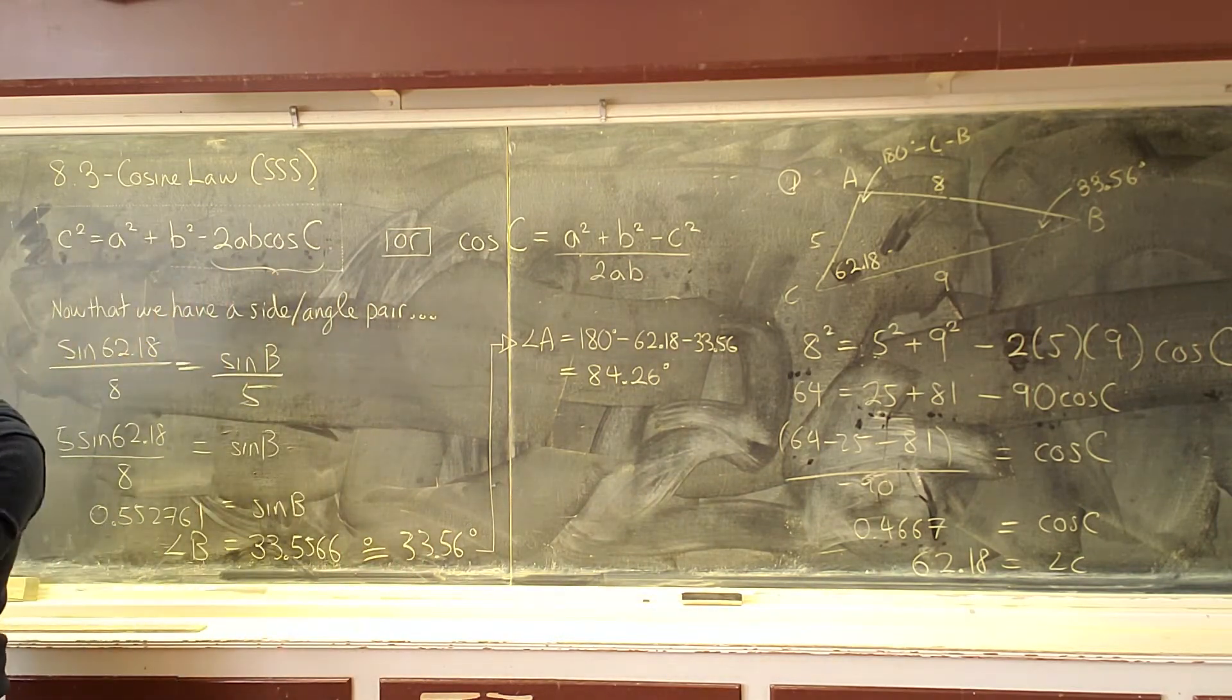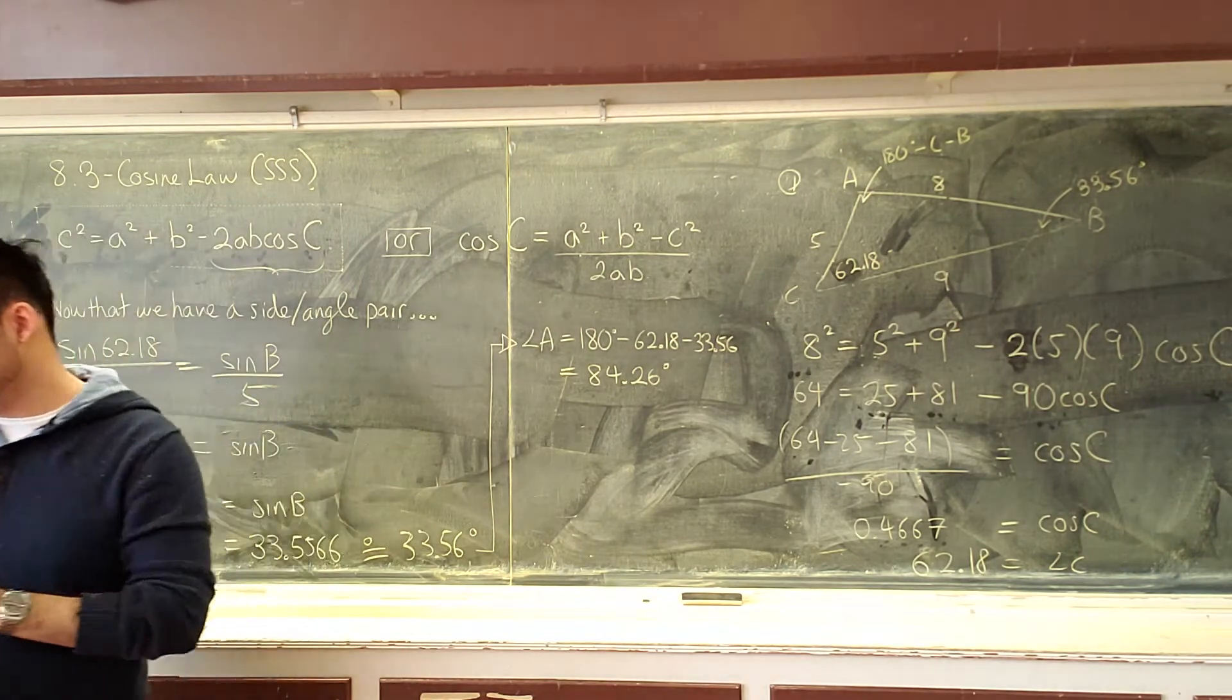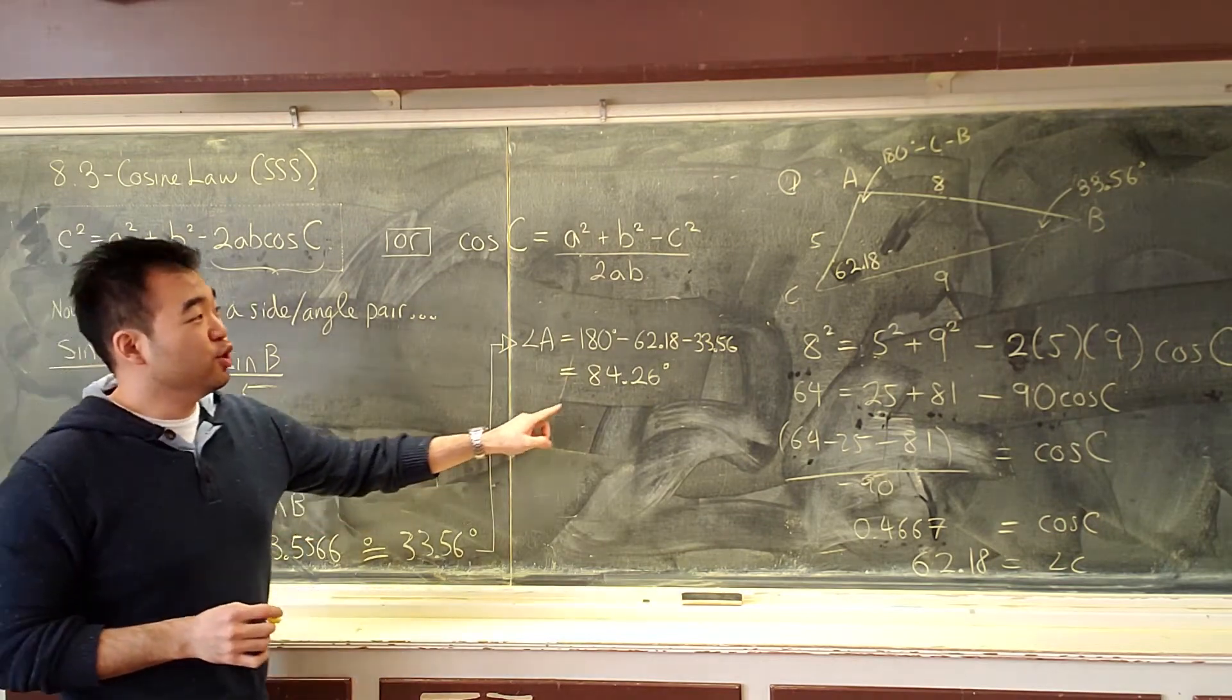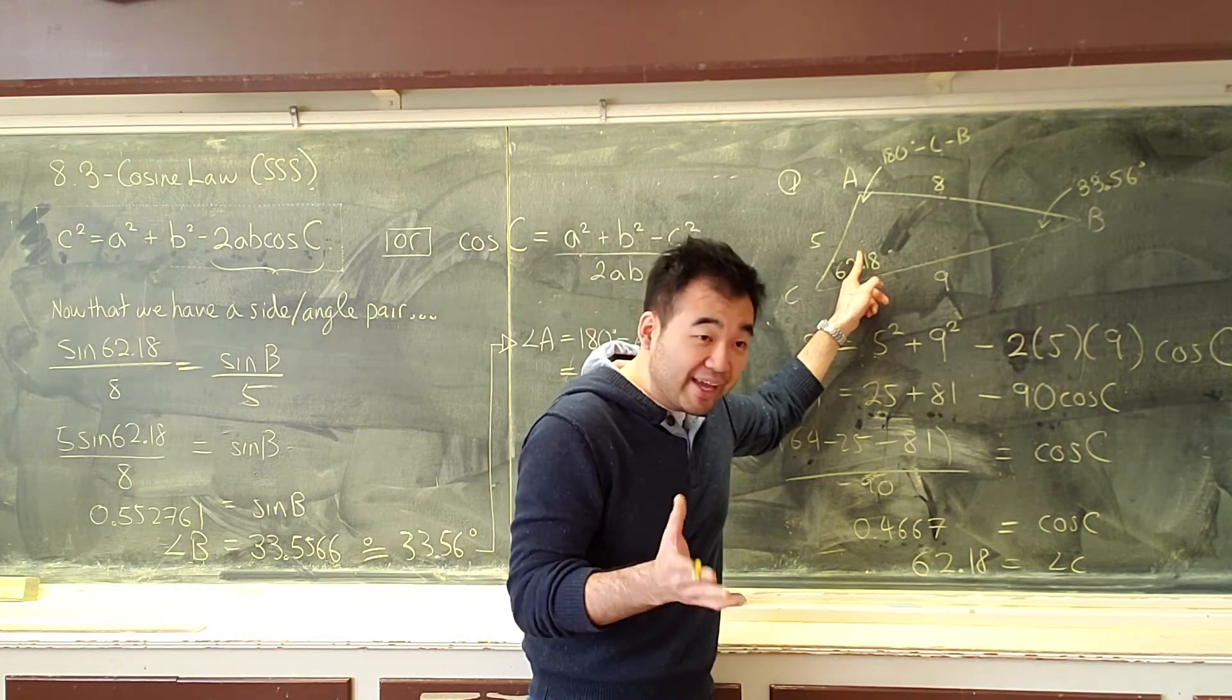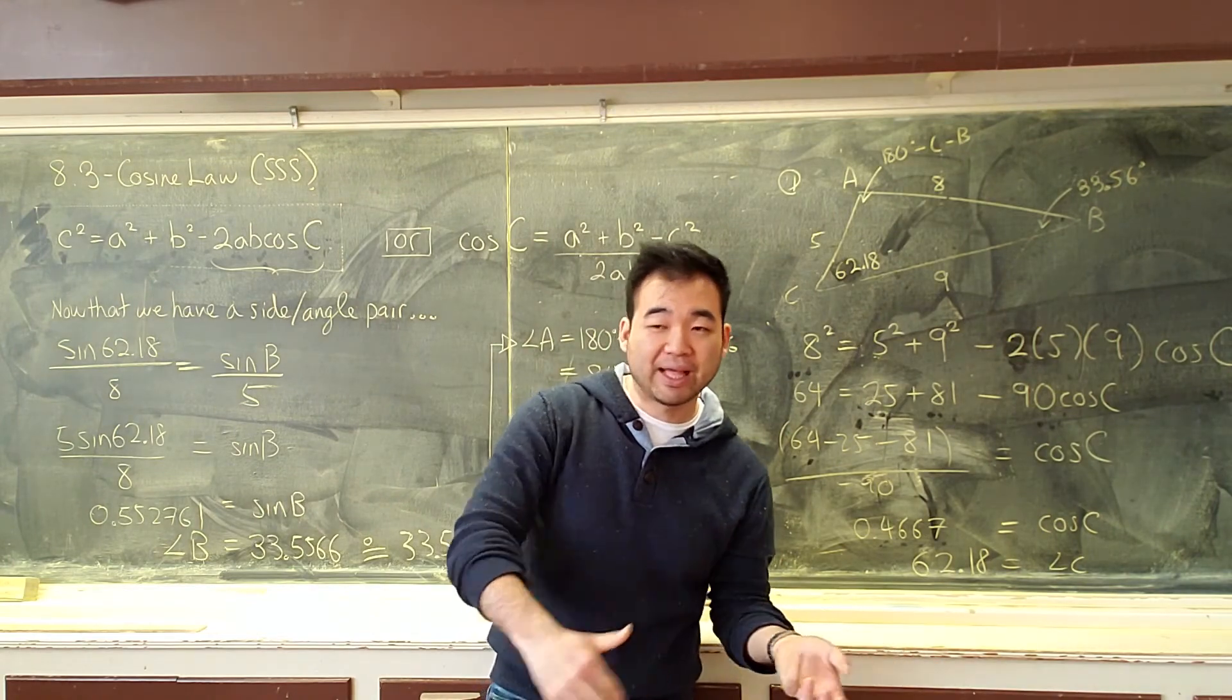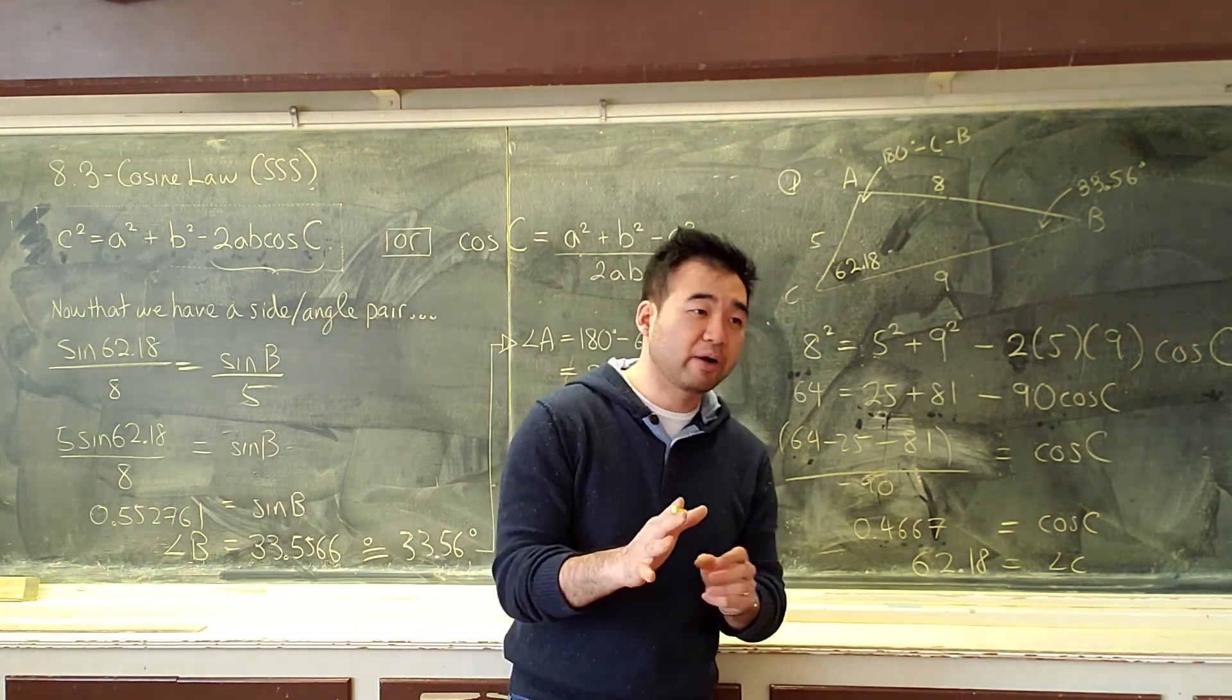Okay. There it is. And you could probably confirm. And I guarantee, if you have been rounding a little too early, you actually might not get a sum of 180. You might get a sum of like 179 or you might get a sum of 181. But that's all because of rounding. Okay? So don't worry about that. It's good.